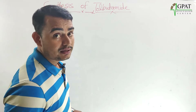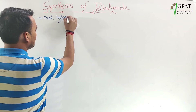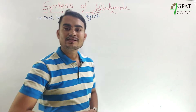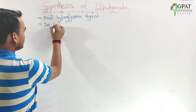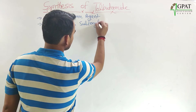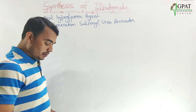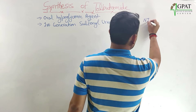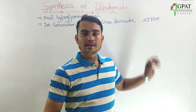Tolbutamide is mainly an oral hypoglycemic agent. It is the first generation sulfonylurea derivative, and it is a basic drug used to treat NIDDM — non-insulin dependent diabetes mellitus.